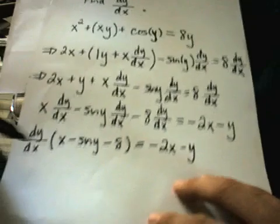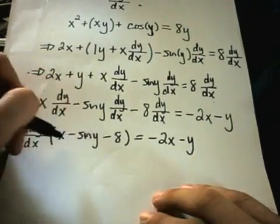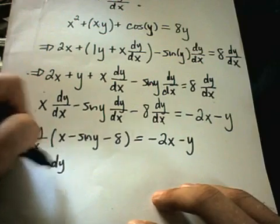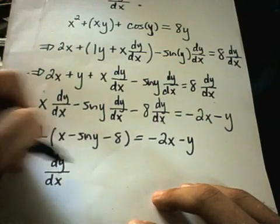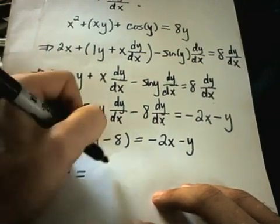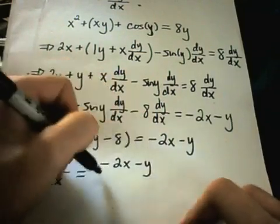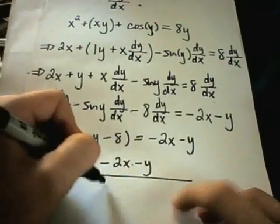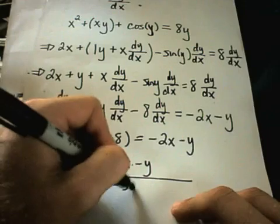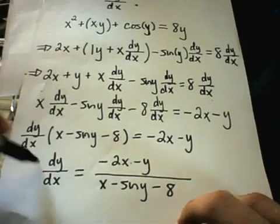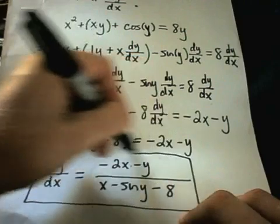And to get dy dx by itself, we simply divide by all of the stuff in the parentheses. So, I'll be left with dy dx on the left side, and on the right side, I'll be left with negative 2x minus y. And after dividing, I'll have x minus sine y minus 8. And that will be our solution to this problem.